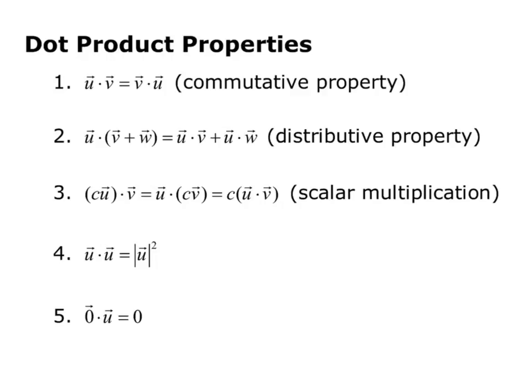The vector scalar c times vector u dotted with vector v equals u dotted with scalar c times vector v equals scalar c times vectors u dot v. So there's scalar multiplication. So that means if you have a number in there, you can just pull it out front and do your dot product and then multiply by your number.